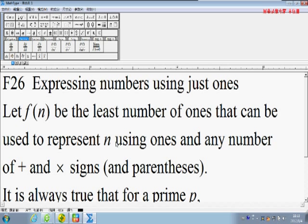Let's see F26: Expressing numbers using just ones. Let f(n) be the least number of ones that can be used to represent n using ones and any number of plus and times signs and parentheses.